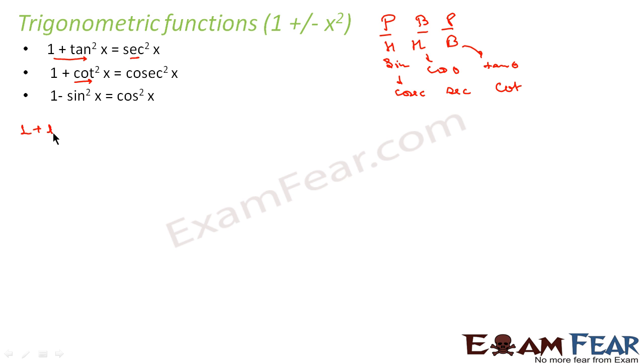So when we say 1 plus tan²x, we can write this as 1 plus P²/B². Taking B² common, this becomes (B² + P²)/B². We know that in a right triangle with hypotenuse H, base B, and perpendicular P, B² + P² equals H².